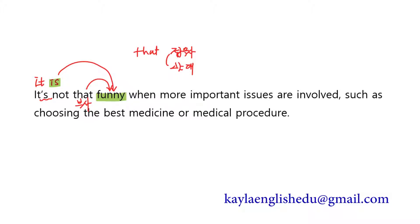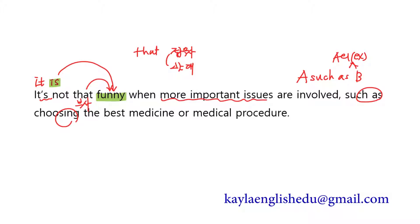When more important issues are involved — 더 중요한 이슈들이 관련될 때 그렇게 재미있진 않다. Such as: A such as B 하면서 B는 A의 example이 된다. 해석할 때는 'B와 같은 A'라고 하죠. 최고의 의료행위나 의학적인 과정들을 선택하는 것과 같은 더 중요한 이슈들이 관련될 때는 그렇게 재미있진 않다. 이 문장을 적절한 위치에 넣는 문제였습니다.